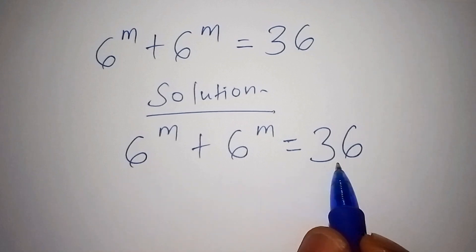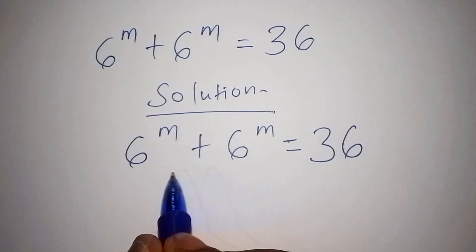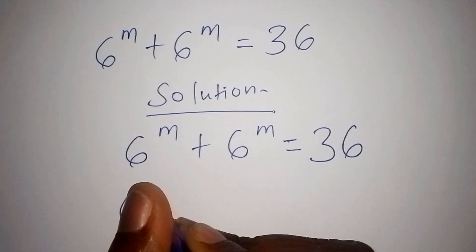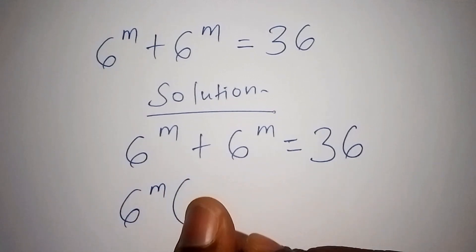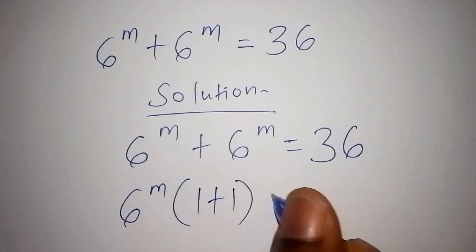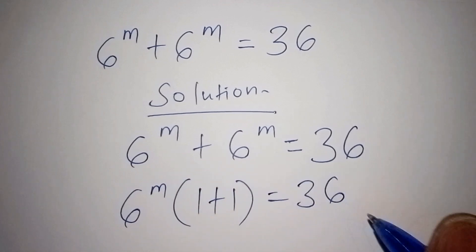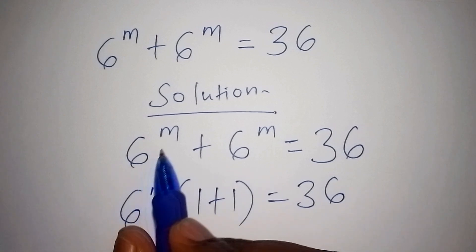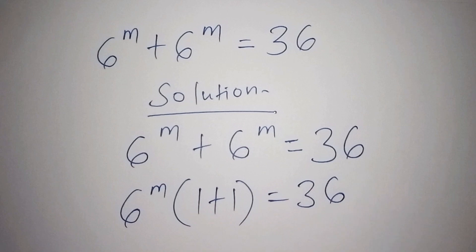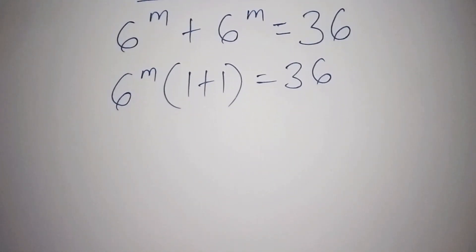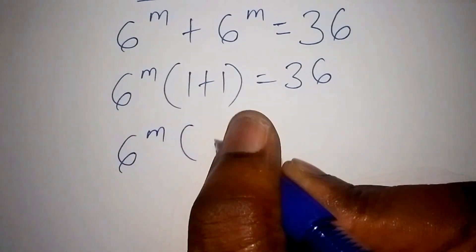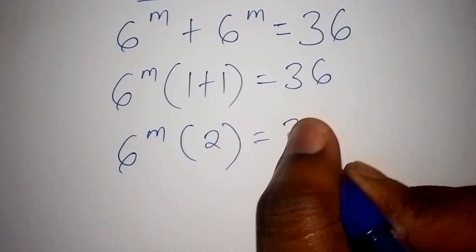How do we go about this? The first thing you need to do is factorize the equation. When you factorize, you'll have 6 to the power of m, then in bracket, 1 plus 1 is equals to 36. So 6 to the power of m multiplied by the number inside the bracket gives us 6^m plus 6^m. Working out the bracket: 1 plus 1 is 2, so 6 to the power of m times 2 is equals to 36.